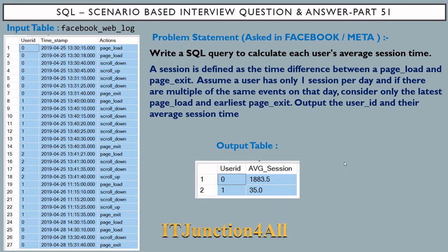First we are going to see the problem statement: write a SQL query to calculate each user's average session time. We have been given a table called facebook_web_log. This table basically contains the actions performed by the user — like page load, scroll down, scroll up, and page exit. A session is defined as the time difference between a page load and a page exit.